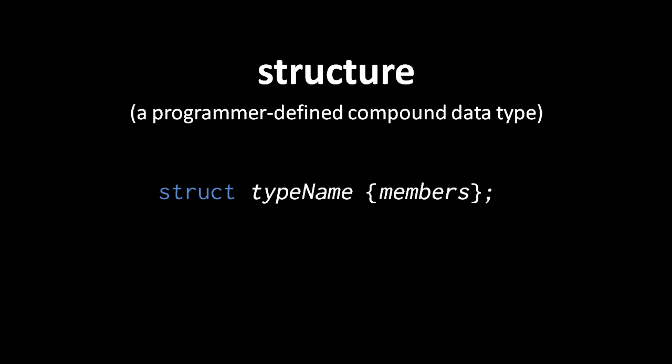To declare a structure type, we use a reserved word struct, followed by a name, followed by a list of members in curly braces. Having declared this struct type, we can then create a variable of this type just as if we were creating a variable of a built-in type, except the type name is preceded by the reserved word struct.